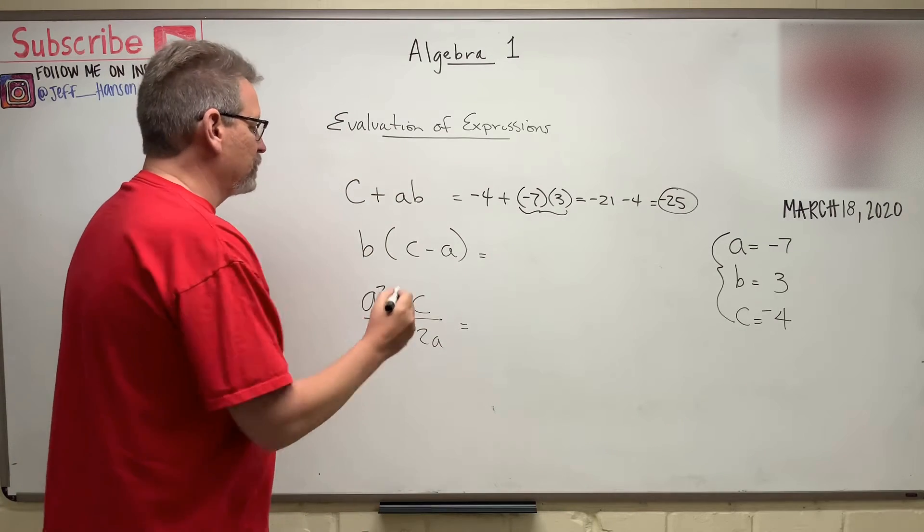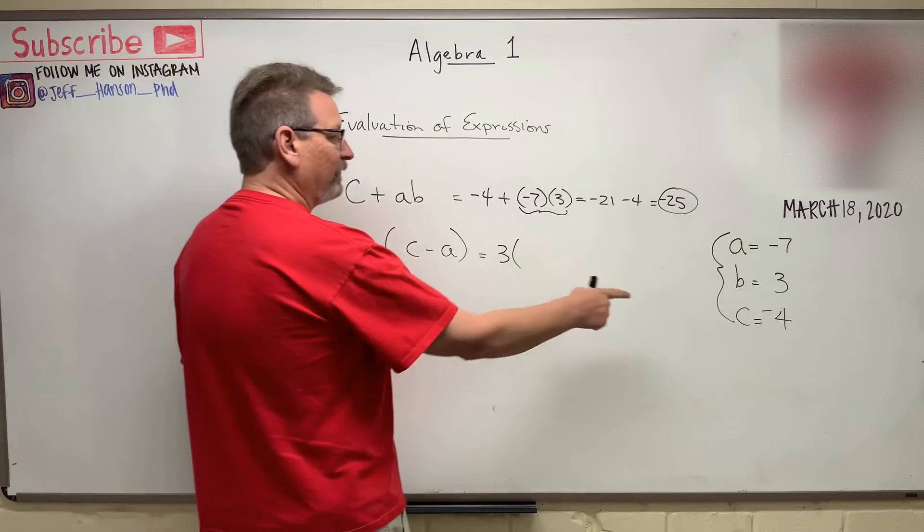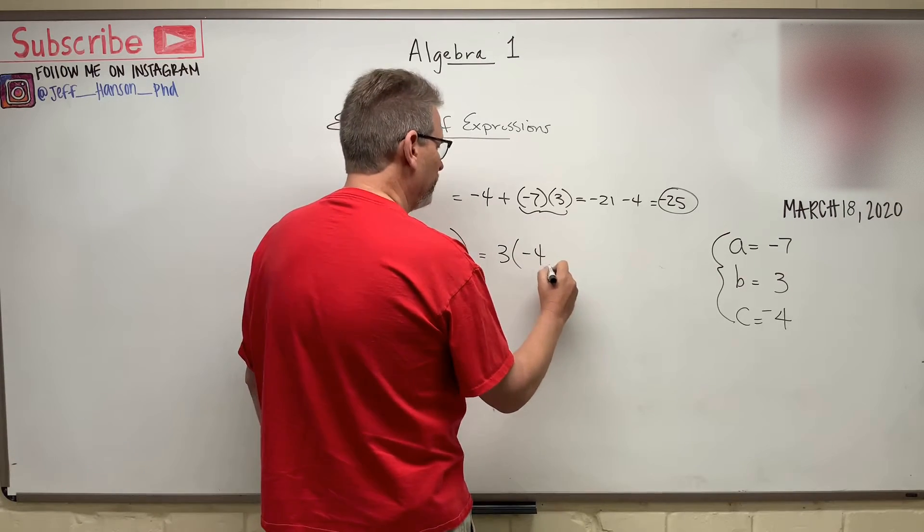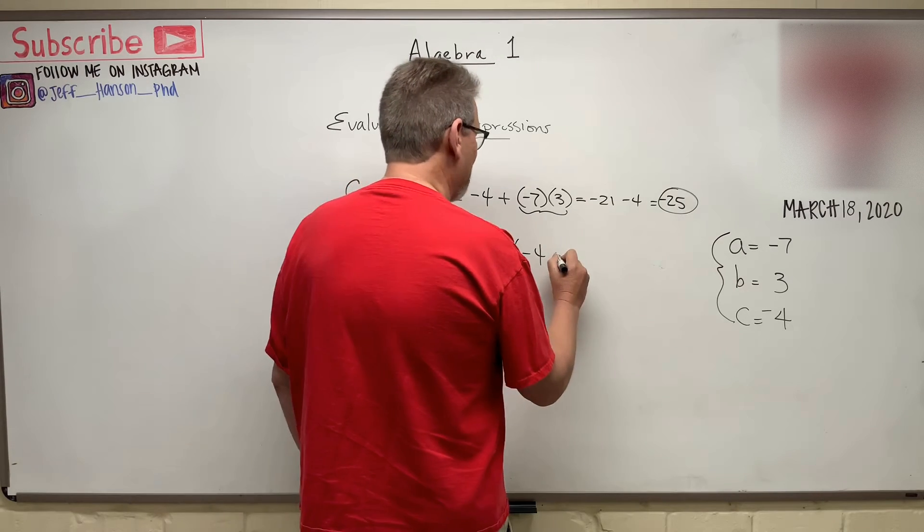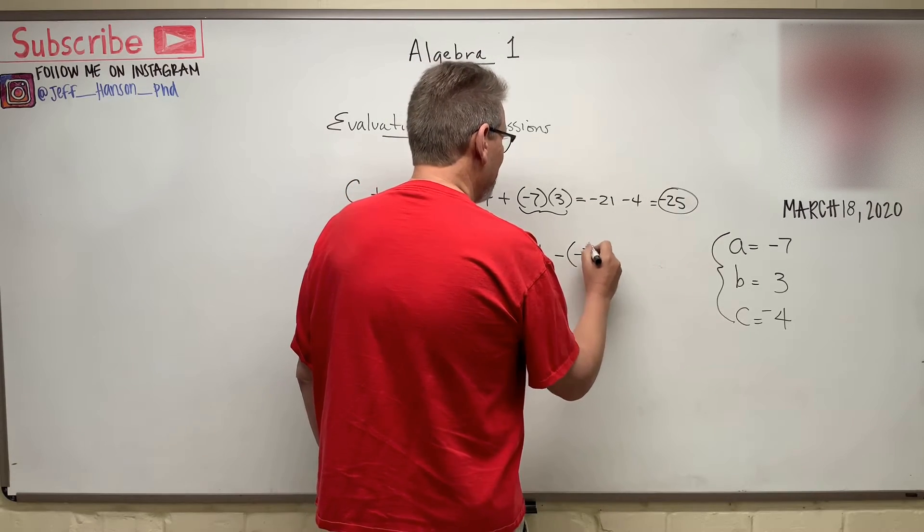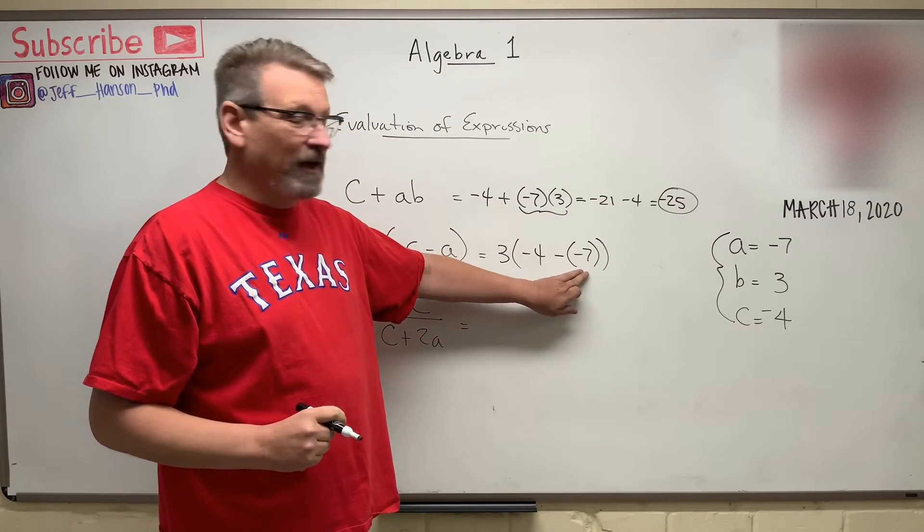Okay. What's number two? Plug a three in. C minus A. What's C? Minus four. Ooh, minus A. But look, A is a negative. So that's going to be minus minus seven. So I think putting those in parentheses helps a lot, right? Because when you have a minus a minus, what does that turn it into?